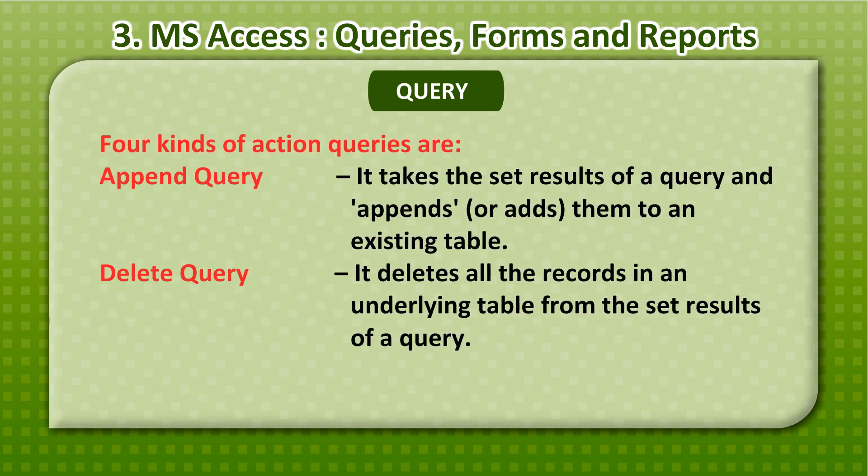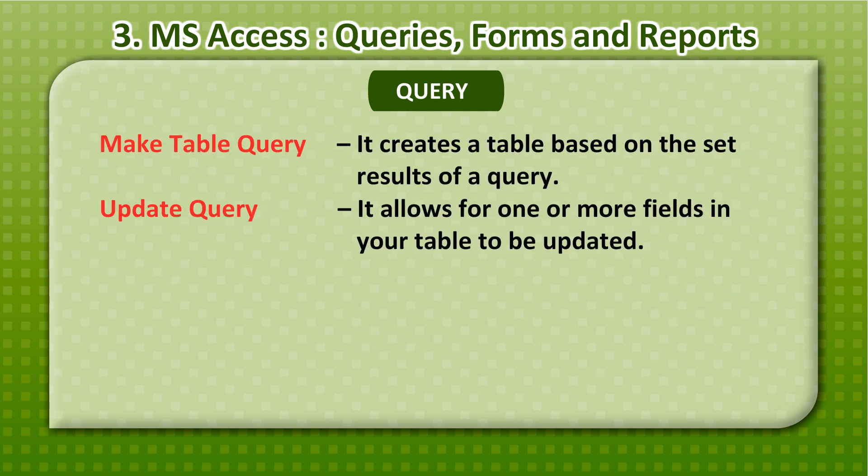Four kinds of Action Queries are: Append Query — it takes the set results of a query and appends or adds them to an existing table. Delete Query — it deletes all the records in an underlying table from the set results of a query. Make Table Query — it creates a table based on the set results of a query. Update Query — it allows for one or more fields in your table to be updated.